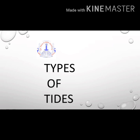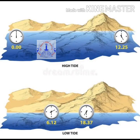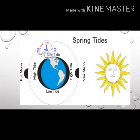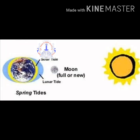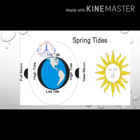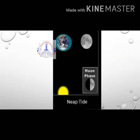Types of tides: as the timing of the tide varies every day, the range of a tide also keeps on changing. Generally, the highest high tide occurs on full moon and new moon days, whereas on the days of the first and the third quarter, the highest high tide is at minimum. Spring tides and neap tides are the two types of tide.